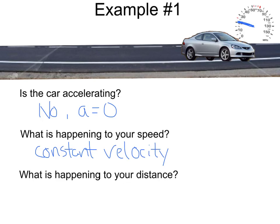What is happening to your distance? If the car was here to start and we put a marker, a second later the car was here, another second later here, another second later here, and the last second the car was here. Looking at that distance, the car covered the same distance in each time interval — that distance looked to be pretty constant. We were covering the same distance in each time interval.